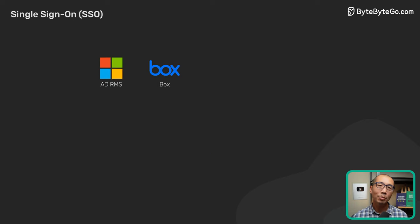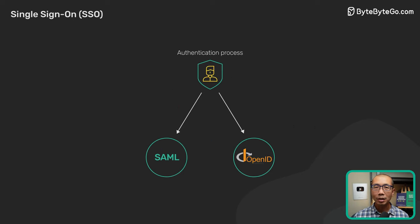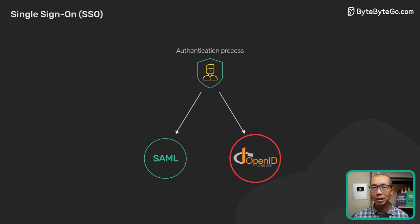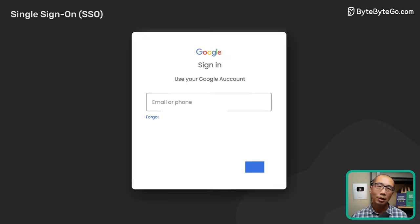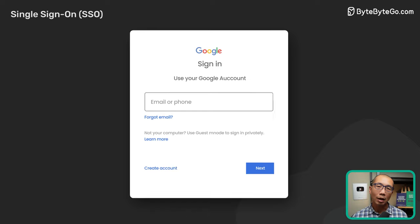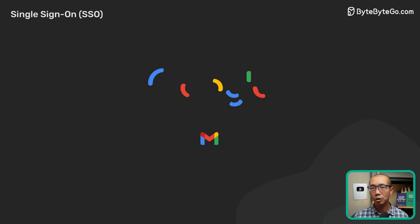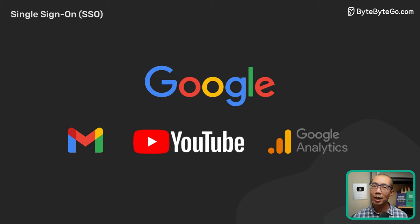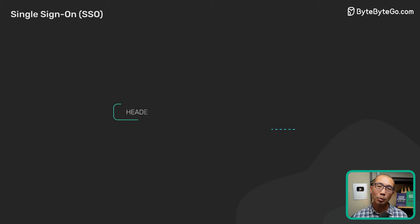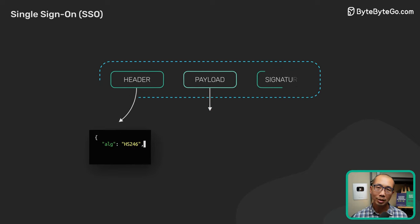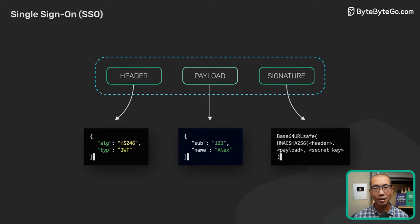SAML is commonly found in the work environment. The other common protocol is OpenID Connect. When we use our personal Google account to sign into applications like YouTube, we are using OpenID Connect. It uses JWT, or JSON Web Token, to share identity information between services.